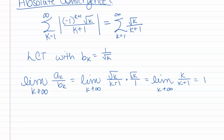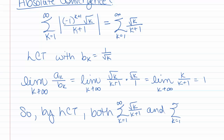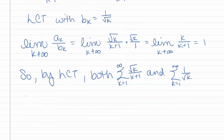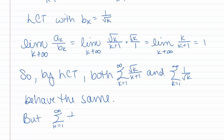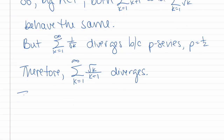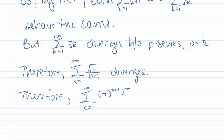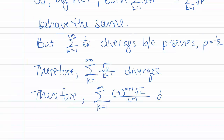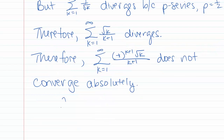So by the limit comparison test, both the sum we care about and the sum k goes from 1 to infinity of 1 over square root of k behave the same. But the sum k equals 1 to infinity of 1 over square root of k diverges because it's a p-series and p equals one half. Therefore, the sum k equals 1 to infinity of negative 1 to the k times square root of k over k plus 1 does not converge absolutely. It converges conditionally.